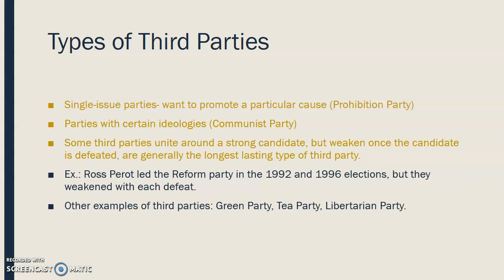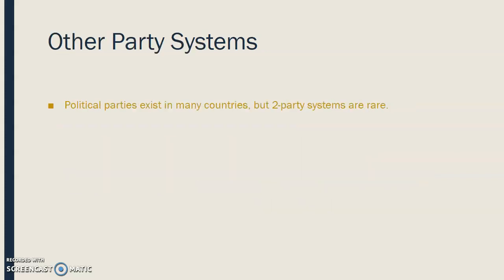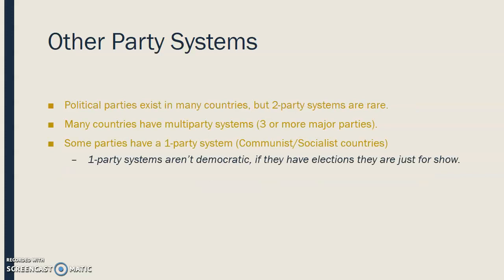Other examples of third parties in the U.S. include the Green Party, the Tea Party, and the Libertarian Party. Political parties exist in many different countries, but two-party systems are very rare. Most countries have multi-party systems, meaning three or more major parties. Some countries have one-party systems, and those are your communist and socialist countries. One-party systems are not usually democratic — if they do have elections, they're usually just for show, the results are fixed, and they don't mean anything.